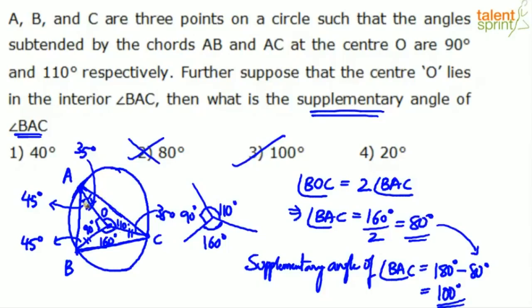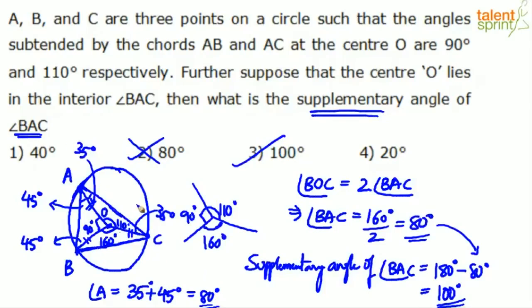Looking at the complete angle A: one part gives 45 degrees and the other gives 35 degrees, so the complete angle BAC is 35 plus 45, which is 80 degrees. The supplementary angle is 180 minus 80, which is 100 degrees. So whether you use the center-angle property or isosceles triangles, the final answer is option 3 — 100 degrees.